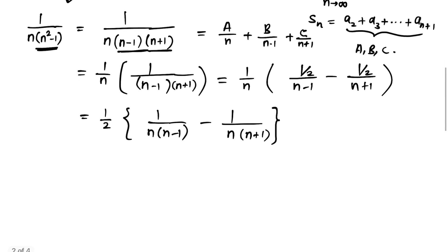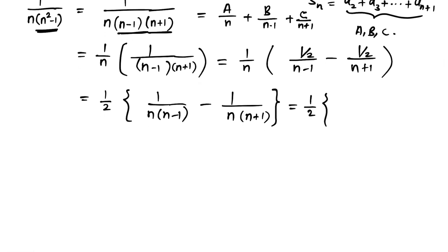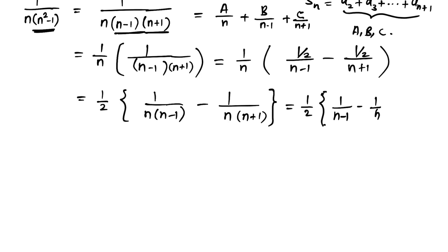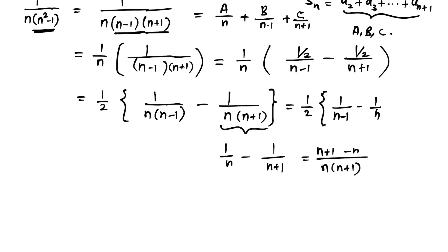Now take the partial fraction of each sub-term. For 1/(n·(n-1)): by cross multiplication the numerator is (n-1) - n = -1, so multiplying by -1 gives -1/n + 1/(n-1). For 1/(n·(n+1)): cross multiplication gives (n+1) - n = 1 in the numerator, so this becomes 1/n - 1/(n+1).